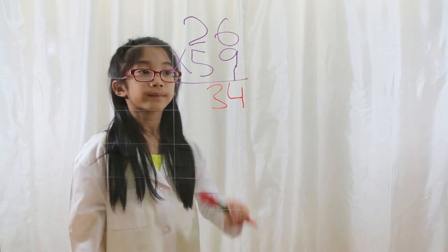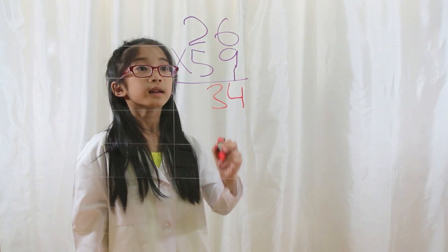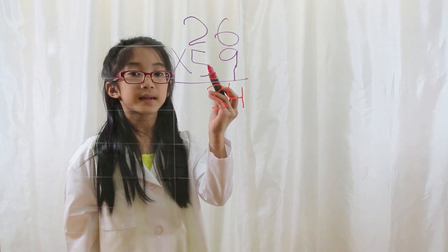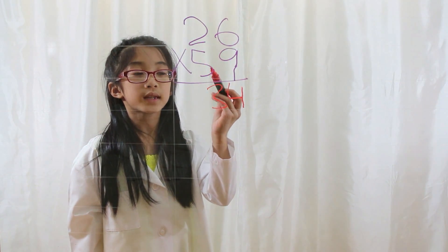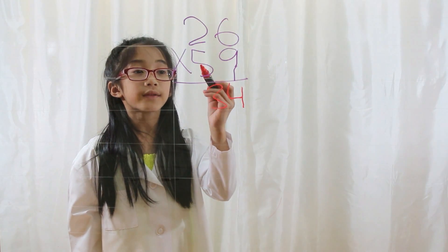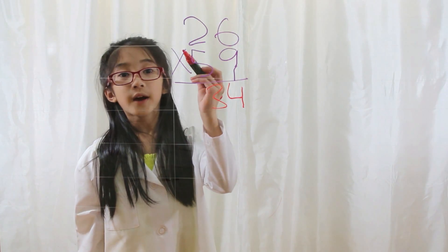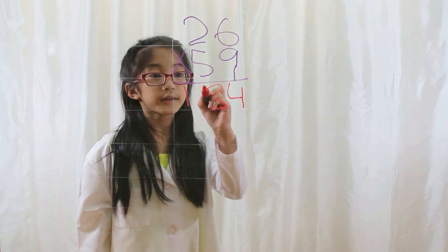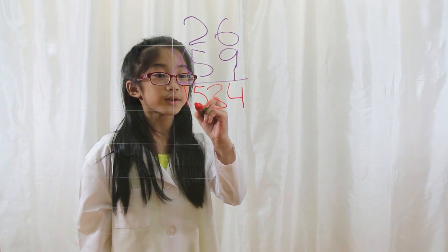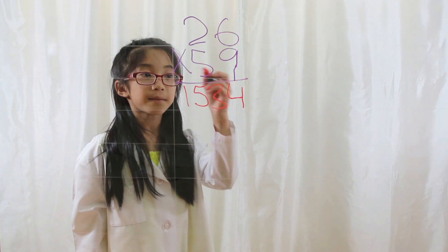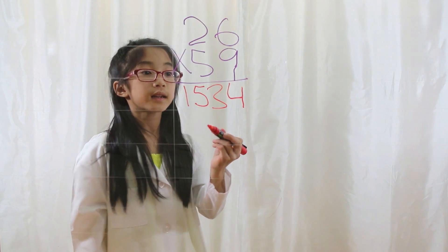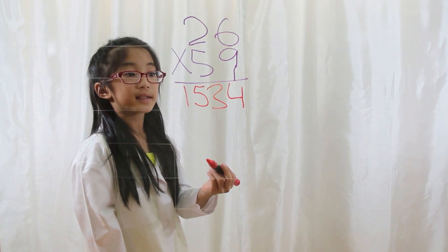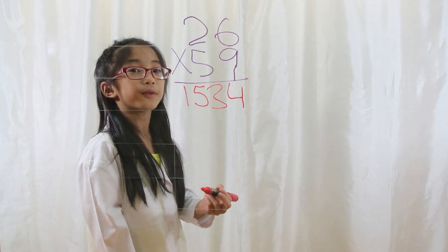Step 3. You take the tens digit of the first number and multiply it by the tens digit of the second number. 2 times 5 is 10. Now you add the 5: 10 plus 5 is 15. You can go ahead and write your answer down. 26 times 59 is 1534.